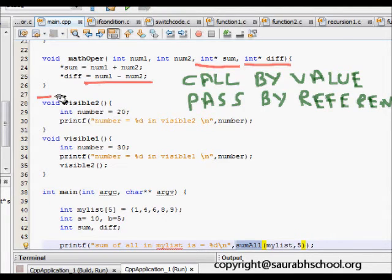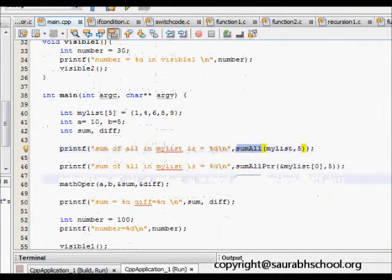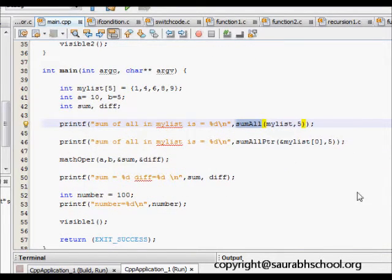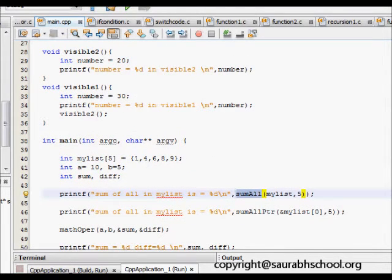Now we see visibility of variables. We have an integer variable called int number, and it is present in visible1 and visible2. We print those values. When we come back here, we call visible1. First int number is there in main, we print int number. Then it goes to visible1, it prints number which is 30. Then it goes to visible2, so there now a new scope of int number is there, so it prints 20.